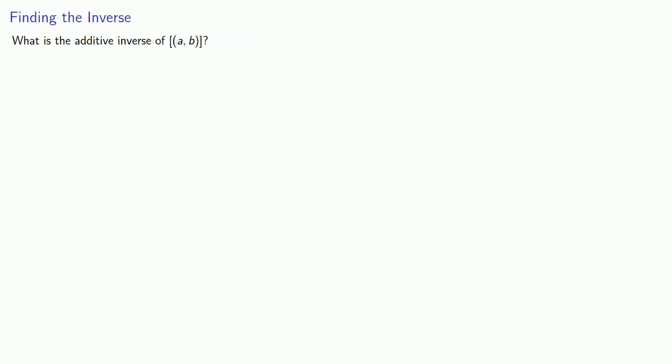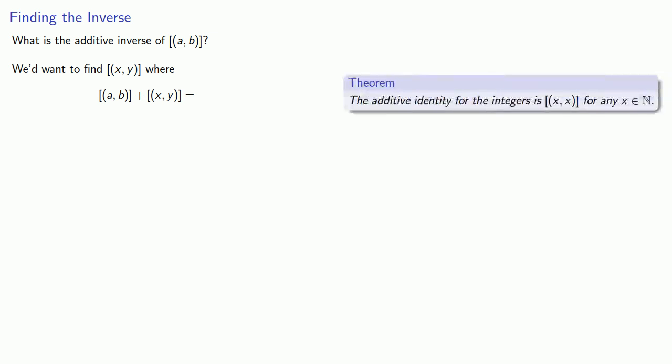So let's find the inverse. What's the additive inverse of the integer a, b? We want to find x, y, where if I add to a, b, I get the additive identity, which is the equivalent class, generated by an ordered pair where both components are the same. So we'll need to come up with a very creative way of indicating that. How about let's call that ordered pair c, c. And so to find this ordered pair, we'll let you figure out that one for yourself.